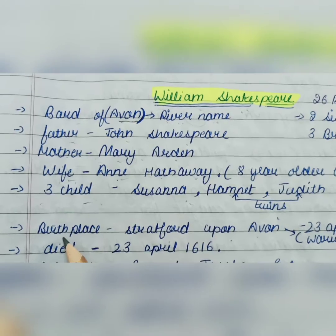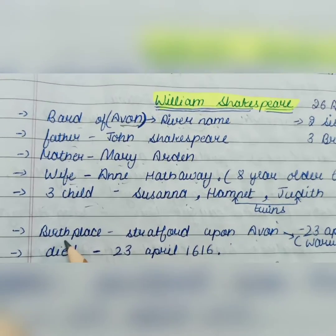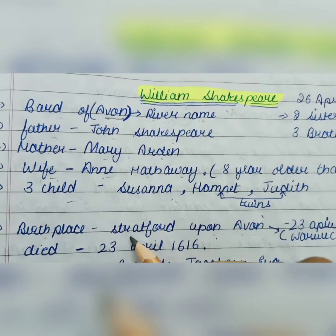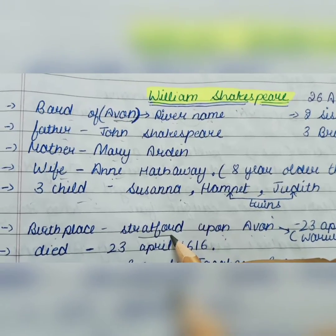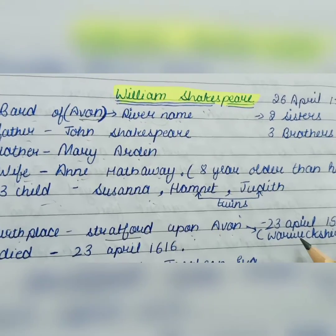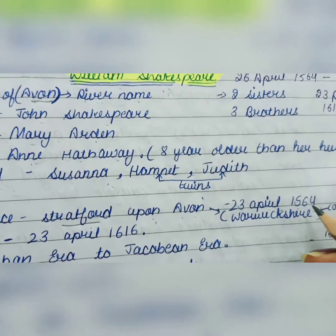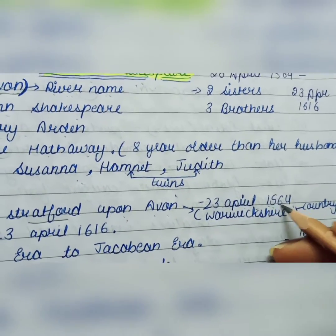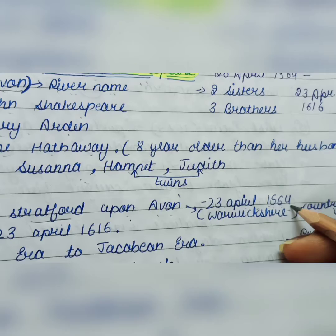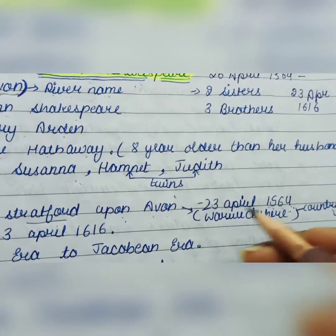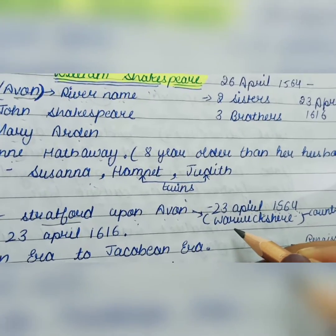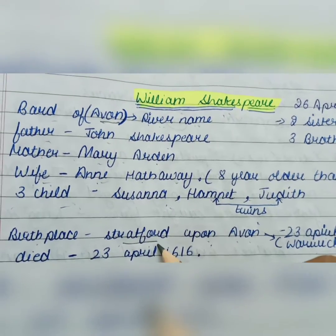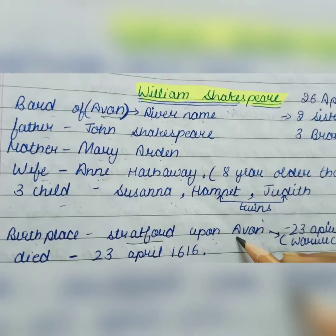William Shakespeare was born in Stratford-upon-Avon. Stratford is the name of the village where he was born, and he was born on 23 April 1564. This was the Elizabethan period. The name of the county was Warwickshire, and the village of Stratford was near the river Avon.